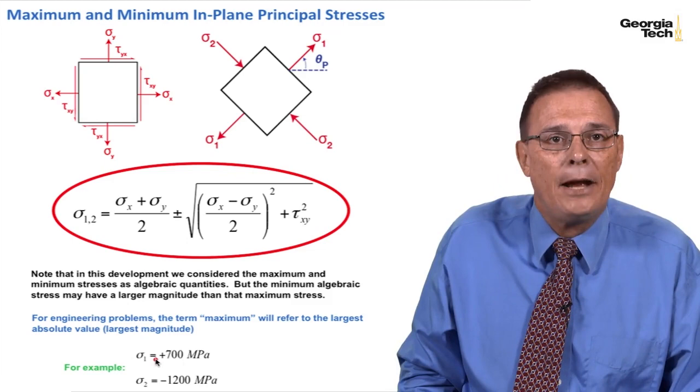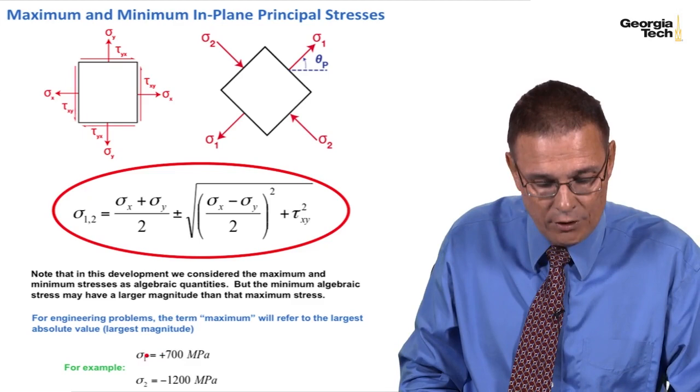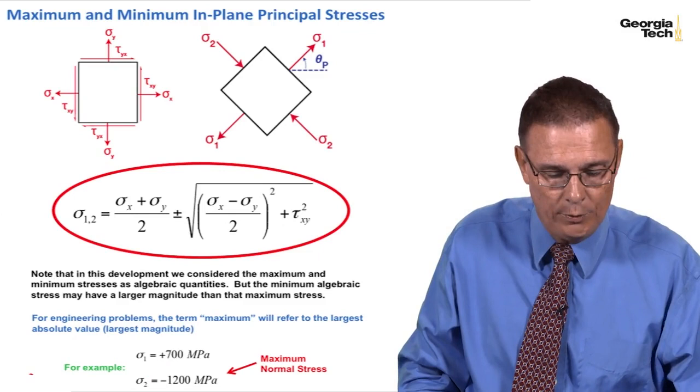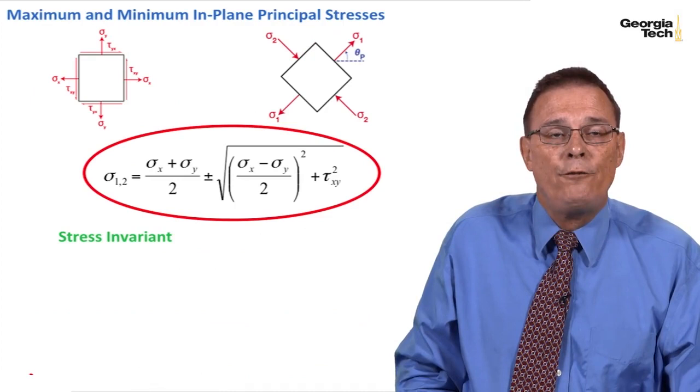Sigma sub 2 is minus 1200 megapascals. This one is in tension. This one is in compression. But if I'm talking about the maximum normal stress, I'm going to refer to the one that is the maximum absolute value when we do engineering problems.